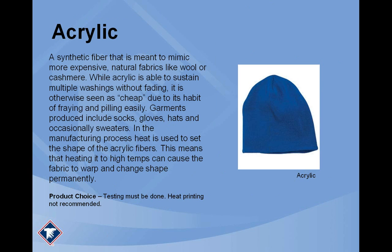Acrylic is a type of garment we don't see a lot of — it's usually used in hats, scarves, and sweaters. Acrylic is a synthetic fiber meant to mimic expensive fibers like wool or cashmere. It's a cheaper alternative to those fabrics. The downside is it's a tad cheap; it does fray easily and does pill a little bit. The real catch is that during the manufacturing process for acrylic fiber, heat is used. So if you heat these garments at high temperatures, you can actually permanently warp the shape of the fabric.